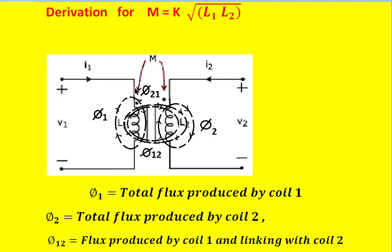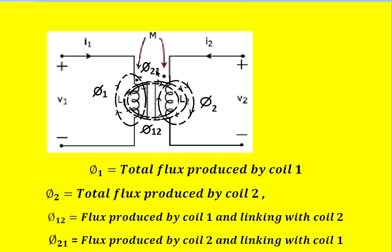Here, coil 1 has a self inductance L1 and coil 2 has a self inductance L2. L1 carries a current I1 and L2 carries a current I2. Both coils are magnetically coupled and they have dots marked on them. When current I1 flows in this circuit, the total flux produced by coil 1 is phi1, whereas I2 flowing through coil 2 produces a flux called phi2.